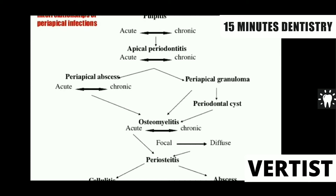The sequelae of pulpitis starts from occlusal caries — that means caries in the enamel, then caries in the dentine. There will be sensitivity. Caries near to the pulpal tissue means the patient will get pain with some stimulus like cold or sweet or food lodgement. Whenever they remove that food lodgement, patient is happy. This suggests that the caries is involved in the dentine — it will always cause sensitivity with some stimulus.